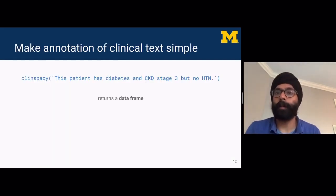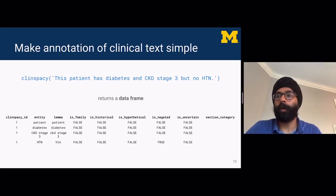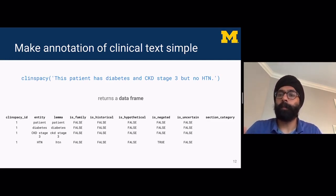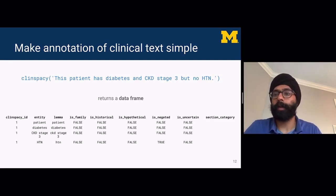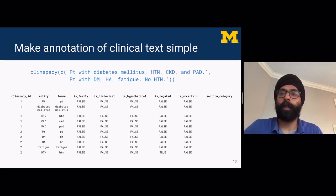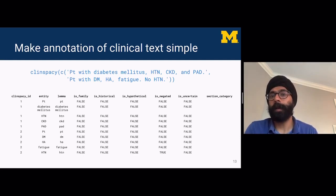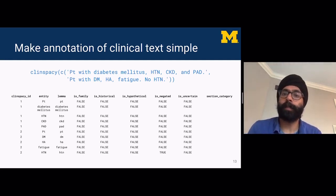The first goal of ClinSpaCy is to make annotation of clinical text simple. If we feed in a simple vector such as 'this patient has diabetes and CKD stage three, but no hypertension,' we get back a data frame that is one row per entity. It shows the entity and lemma, and facts from MedSpaCy about whether it is historical, hypothetical, or negated — and hypertension is correctly picked up as being negated. When a vector with multiple items is provided, ClinSpaCy assigns different IDs, though diabetes mellitus and DM may be assigned different entities even if they refer to the same thing.